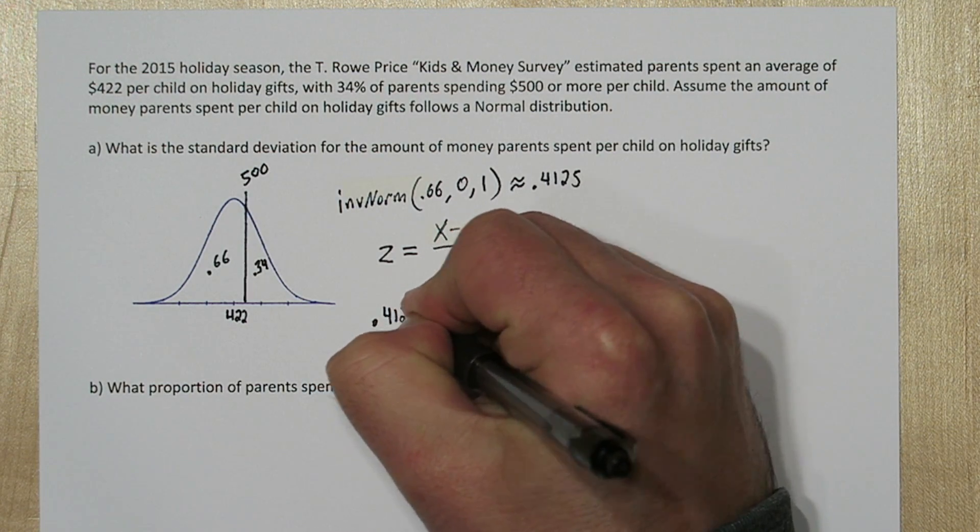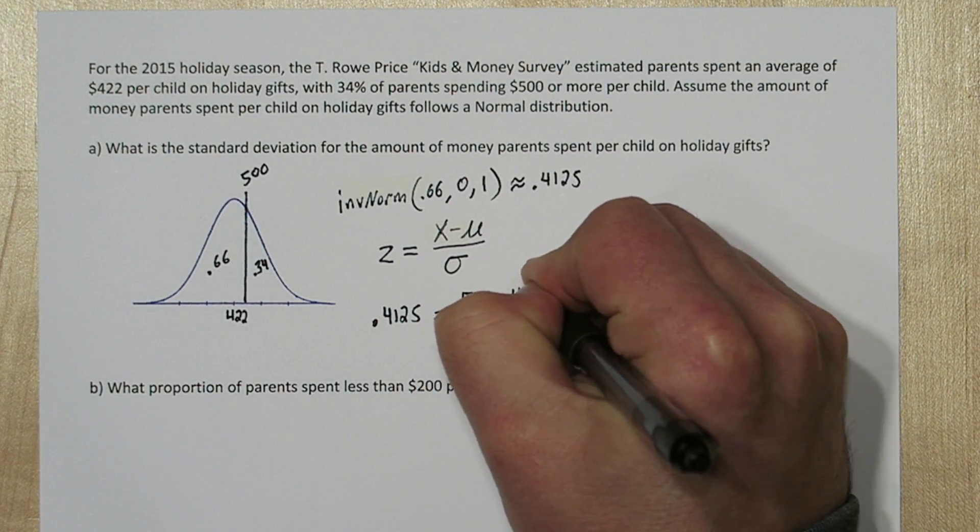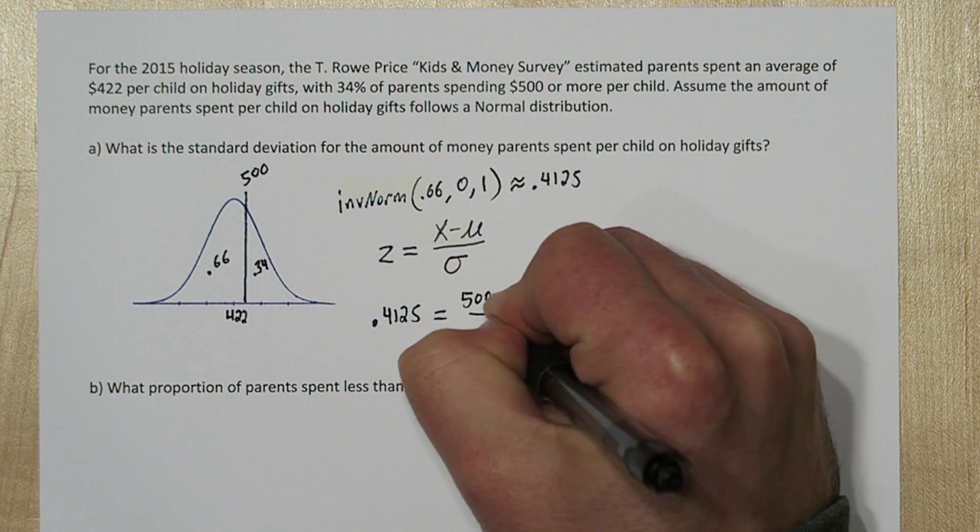Our x-value, our cutoff, is 500. We know our mean is 422. And this is the only value we're missing, sigma.